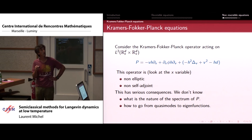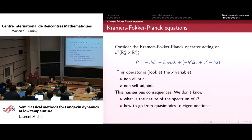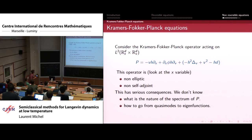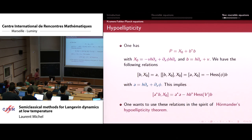Now let me speak about Kramers-Fokker-Planck equation. You consider this Kramers-Fokker-Planck operator and want to compute the small eigenvalues. At first glance, you don't even know if there are small eigenvalues. This operator has two defaults: it is non-elliptic because of the transport part, and it is non-self-adjoint. But it turns out to be hypoelliptic. The consequences are that we don't know the nature of the spectrum of P, and we don't know how to go from quasi-modes to eigenfunctions, since we don't have a min-max principle for such operators.